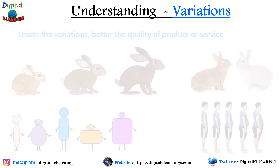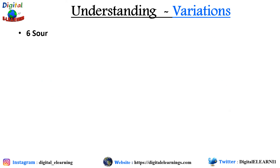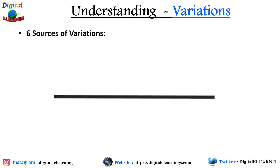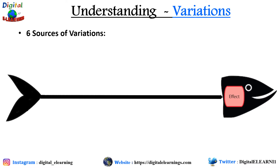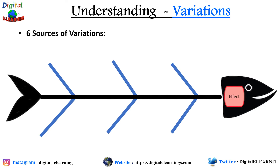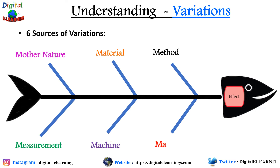Now let us look at variation from the cause and effect diagram, or the fishbone diagram, which has six sources of variation. Let's construct the fishbone diagram. We have six bones representing six sources of variation: method, material, mother nature, measurement, machine, and manpower.